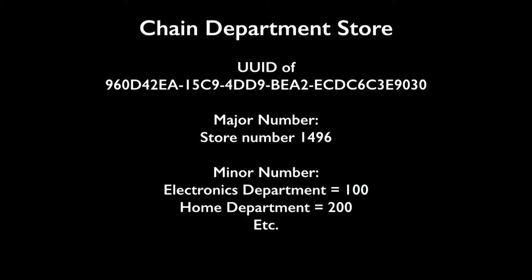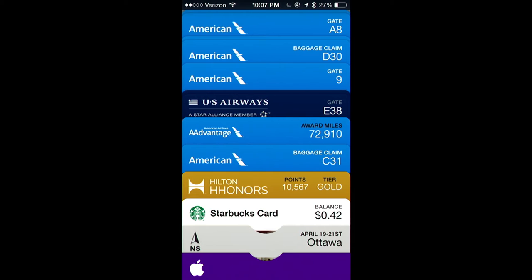Let's make that into a simple example. A chain department store could generate a UUID for all their applications. They could say the major number is the store number — say store 1496 — and the minor number represents which department that beacon is in, then sprinkle those throughout the store. A coffee chain doing the same thing would allow their Passbook pass, which previously only showed up on your lock screen at your ten favorite locations, to now show up at any location where they've put a beacon. The department store could customize their app to show electronics content in the electronics department, home content in the home department, and so on.